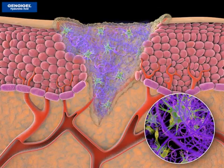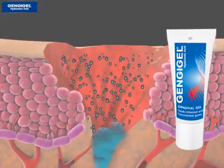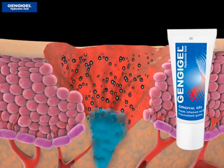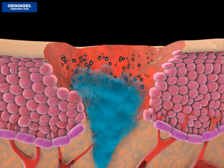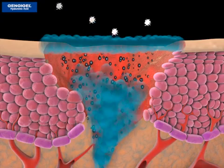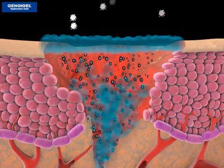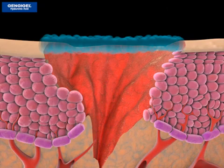Applying gingi-gel, hyaluronic acid, to wounded oral mucosa accelerates the process of joining the fibrin and fibronectin matrix, thereby facilitating the migration of fibroblasts. Moreover, gingi-gel also produces a bacteriostatic effect, facilitating proper healing by forming a film that prevents the penetration of bacteria and viruses.